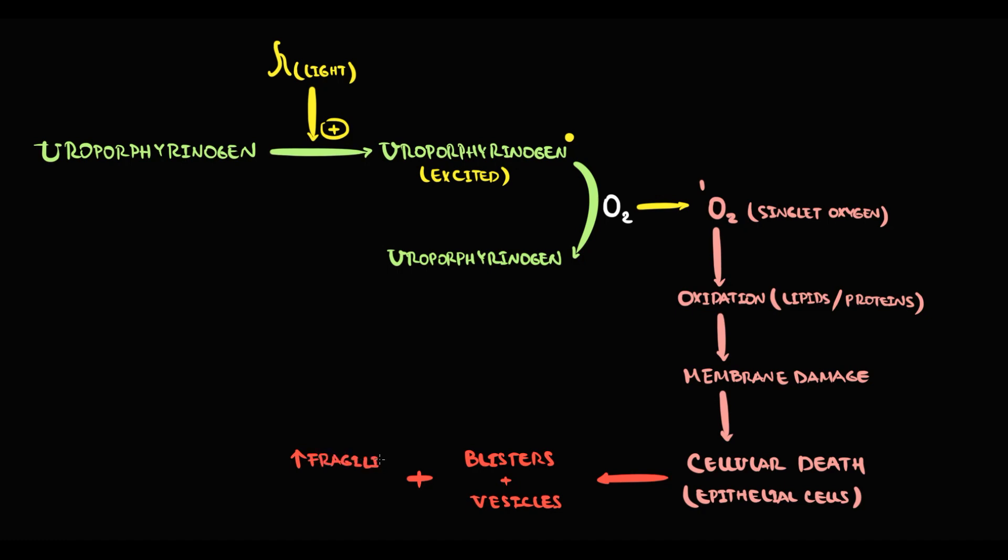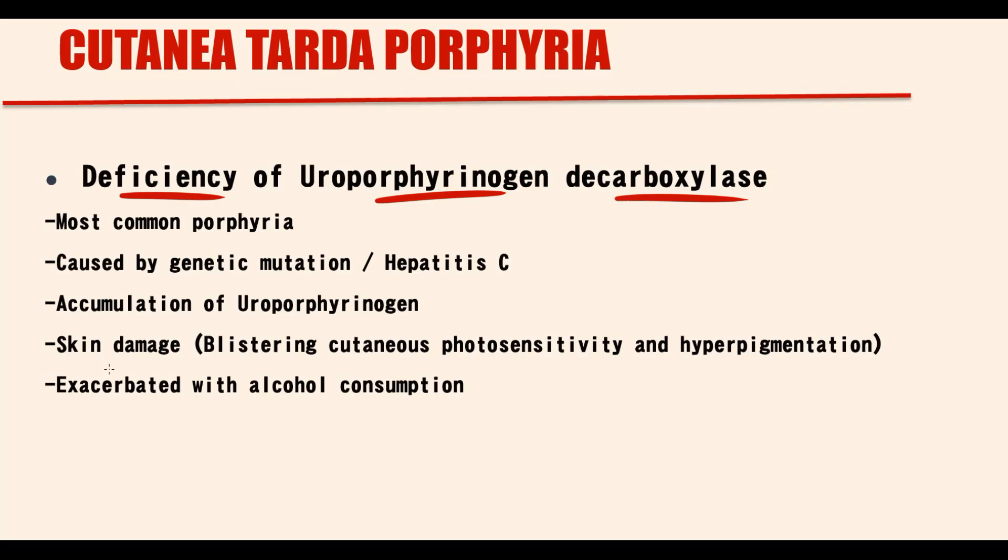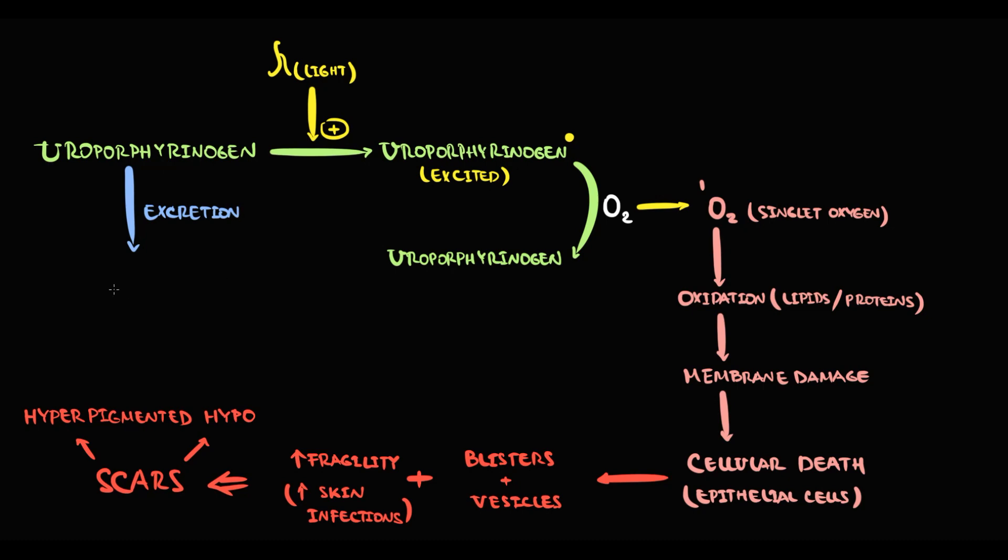Because skin becomes extremely fragile, even minor trauma can cause formation of a wound that easily gets infected. And such repeated damage to the skin causes massive formation of scars. Scars can be hyperpigmented or hypopigmented. So, the skin in patients with porphyria have blisters and vesicles in combination with hyperpigmented areas that are caused by excessive scarring. Also, we can excrete uroporphyrin with the urine. And increasing amount of uroporphyrin in the urine gives urine a tea color.